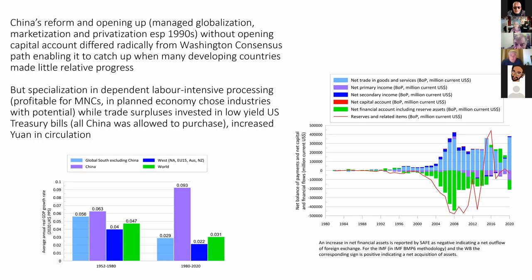China's reform and opening up — really a path of managed globalization — was in certain economic terms extraordinarily successful. The data depicts the rate of growth of China in the first 30 years up to 1980, and then from 1980 to 2020. China grew at 6% per year in the first period; then from 1980 to 2020, China grew at 9% per year on average through that period.